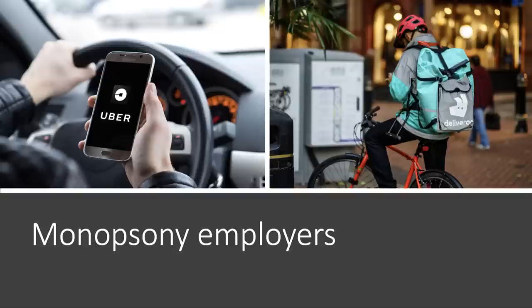Monopsony is really important to think about, particularly if you're studying the labour market as part of your economics. Monopsony occurs in the labour market and means that the employer has buying power when hiring employees. My two examples would be Uber and Deliveroo, the food delivery service. There are big issues to do with monopsony power — well worth having a couple of good examples.